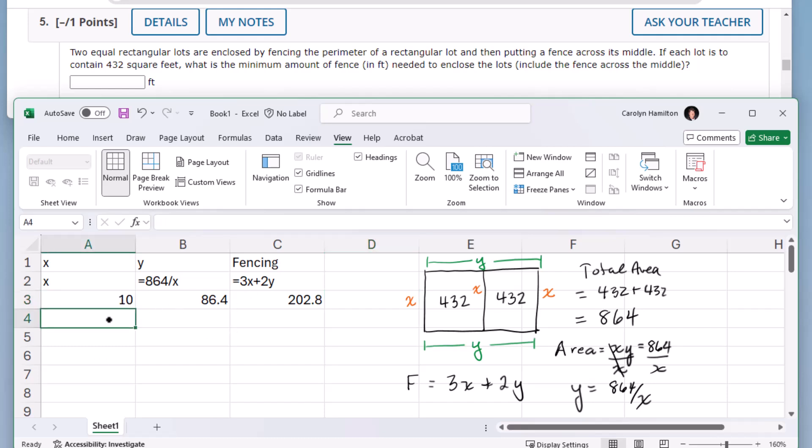Okay, and then if we make the x bigger, and copy these formulas down, we can see that as the dimensions change, the amount of fencing changes. And right here, that's the smallest number that I can see, so let me copy this down.